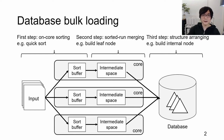The second step reads all sorted runs from intermediate space and then merges the runs. In the B+ tree case, for example, the second step builds the leaf nodes. The third step arranges the data structure. In the B+ tree case, for example, the third step builds the internal nodes.